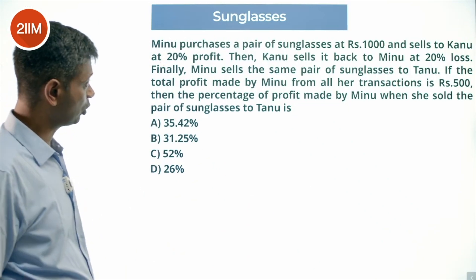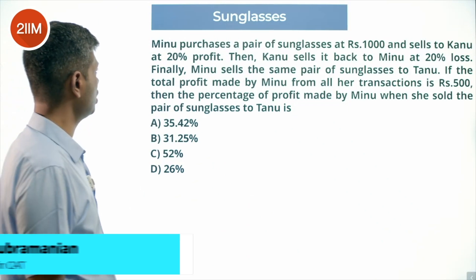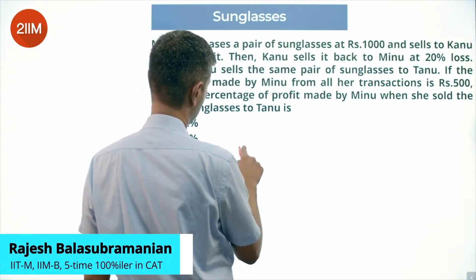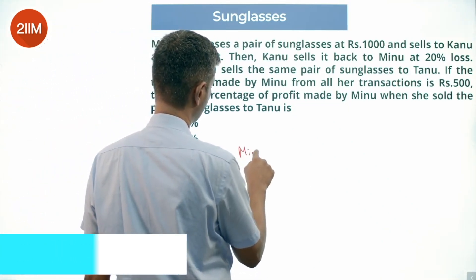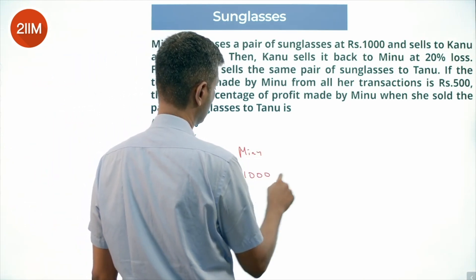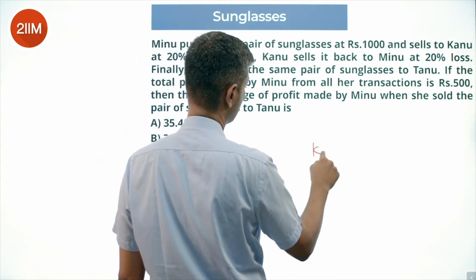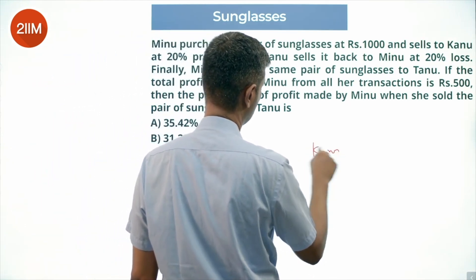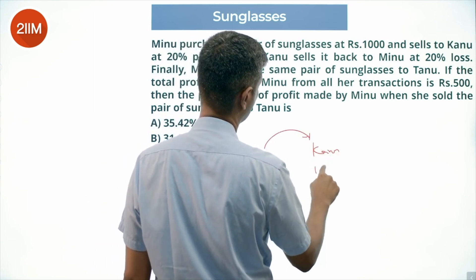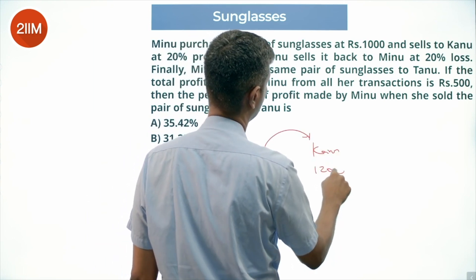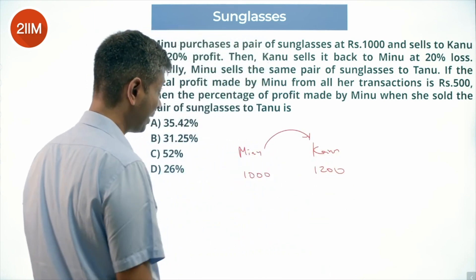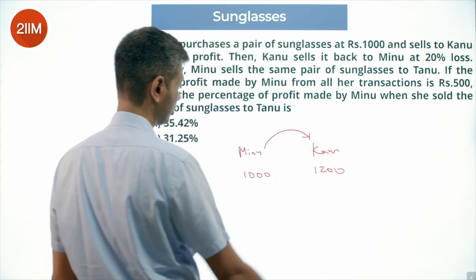Minu purchases a pair of sunglasses at ₹1000 and sells to Kanu at 20% profit. So Minu buys at ₹1000, sells to Kanu at ₹1200. Then Kanu sells it back to Minu at a 20% loss.